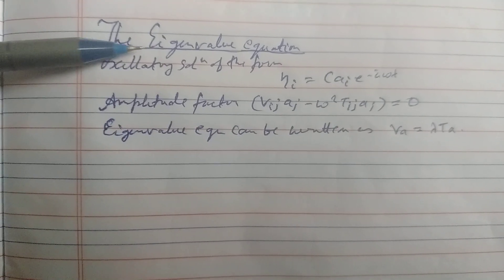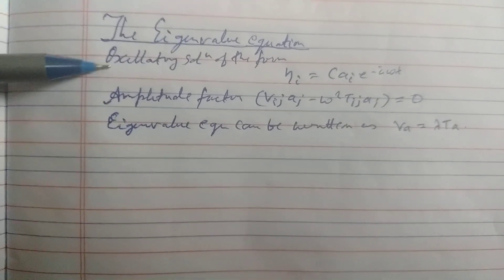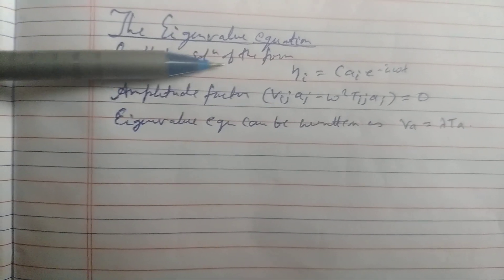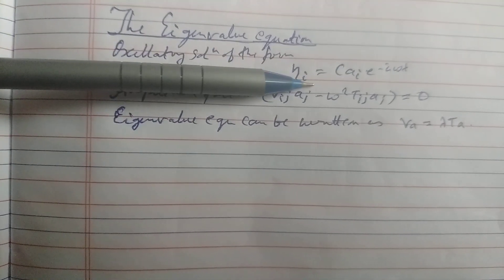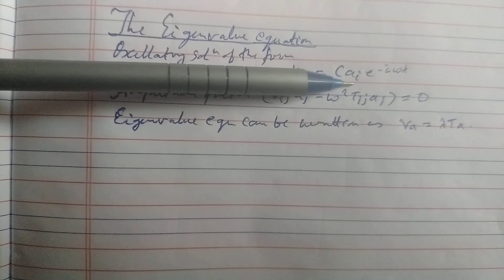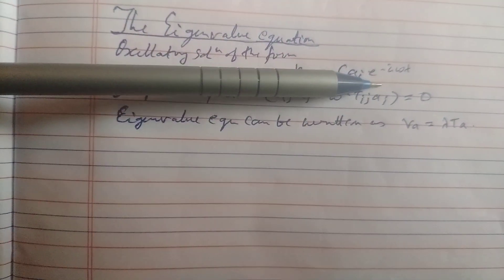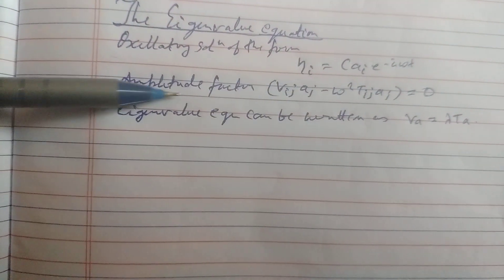Hi friends, today's topic is the eigenvalue equation. We consider an oscillating solution of the form η_i equal to a_i times e to the power (r minus i omega t).